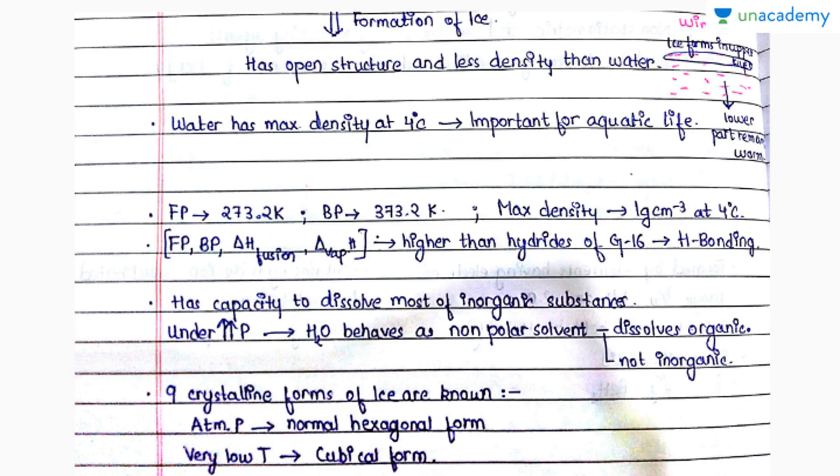Water has maximum density at 4 degrees Celsius, and this property is very important to sustain aquatic life. Because in winters, the upper water layer will form ice, but this ice formation will help this water to be at a comparatively higher temperature, thus sustaining life.